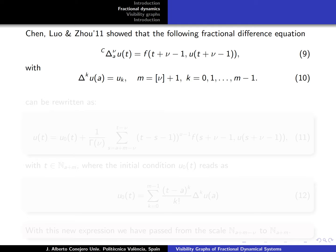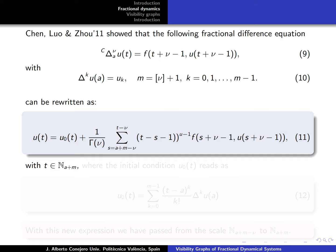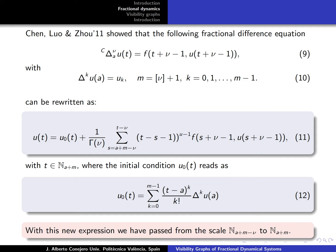It was studied by Chen, Liu and Zhou that we have the following fractional difference equation represented in 9, with the initial conditions also indicated in 10. This permits us to represent our fractional dynamical system as we have in 11, where t is some value that can be taken in ℕ_{a+ν}. In this case the initial condition reads as we have in expression 12. With this new expression we see that we have passed from the scale ℕ_{a+ν} minus ν to ℕ_{a+m}.